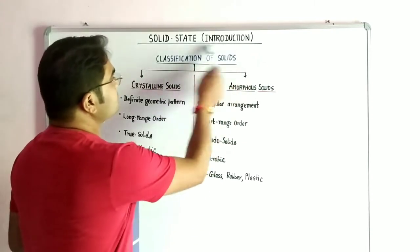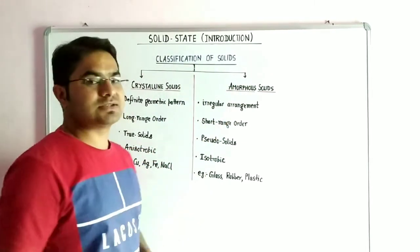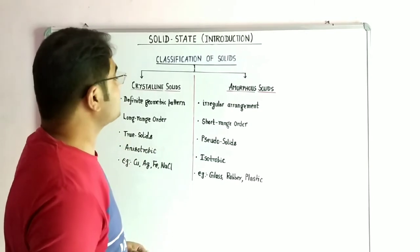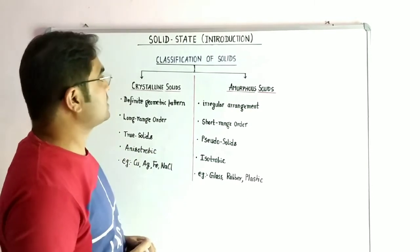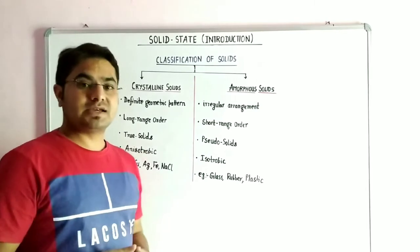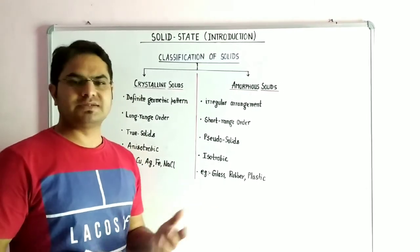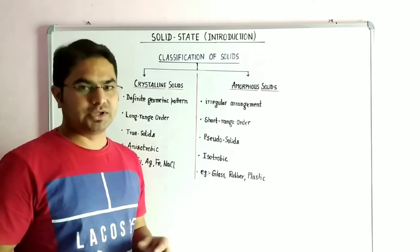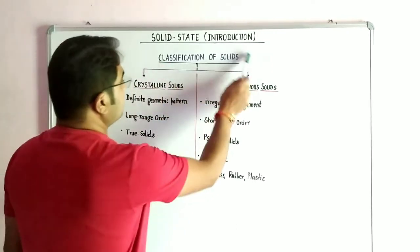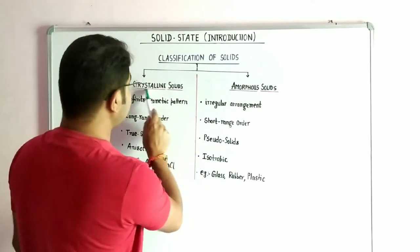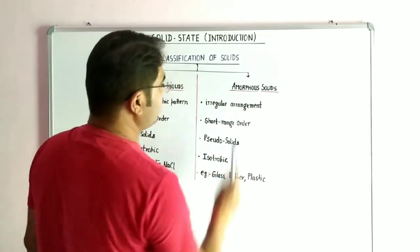Then move to the classification of solids. Classification of solids on the basis of the properties exhibited by different solids, on the basis of nature present in their constituent particles, that is constituent particles means atoms, ions and molecules. So they are broadly classified in two categories: one is crystalline solid and one is amorphous solid.